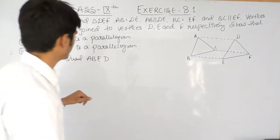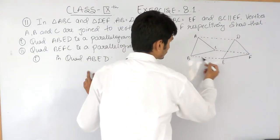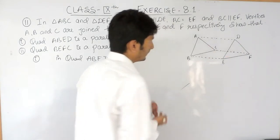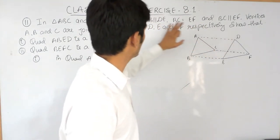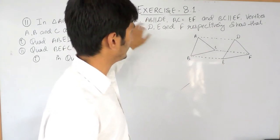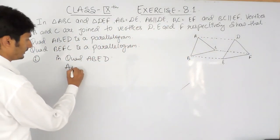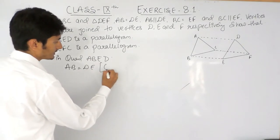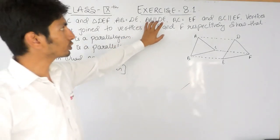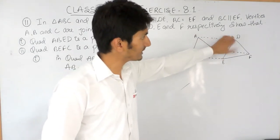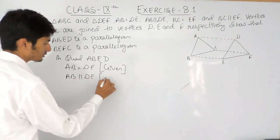In this quadrilateral ABED, side AB is equal to DE — this is given to us. So that side is equal to this side. Similarly, these two sides are also parallel, so AB is also parallel to DE — this is also given to us.